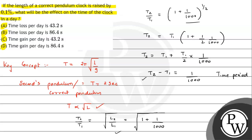Time period is increasing, so frequency will decrease. And if frequency decreases, time will be lost. Since time period is increasing, frequency is decreasing, so time will be lost. Time loss per second will be one by thousand.